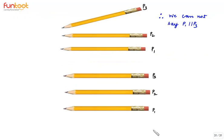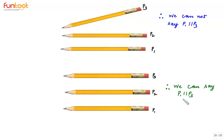Let's see the second scenario. Here P1 is parallel to P2, and P2 is parallel to P3, so we can say that P1 is parallel to P3.